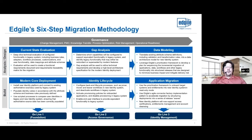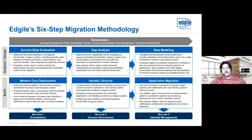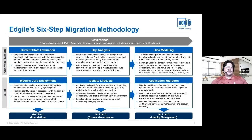Once the core is in place, we move into identity lifecycle events — joiner, mover, and leaver processes — getting users from authoritative sources into downstream systems. The last phase is application migration, where we take prioritized applications and add them into Identity IQ or whatever the modern platform is. This isn't a big-bang approach — we use an agile process to slowly build everything up over time.